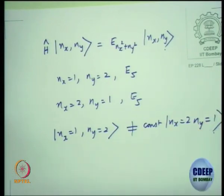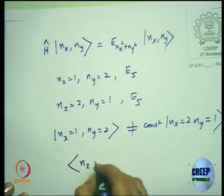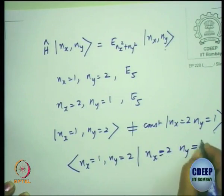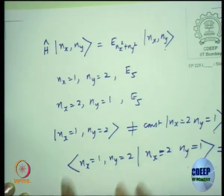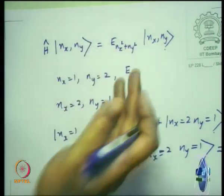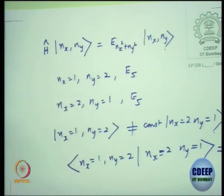The state with n_x=1, n_y=2 is not proportional to the state with n_x=2, n_y=1. They are linearly independent — in fact their inner product is zero if you are looking at an orthonormal basis. So this is a degenerate situation. If observable A is the energy operator for a 2D particle in a box, there will be a degenerate situation. But let us consider a 1-dimensional particle in a box where eigenvalues are distinct.